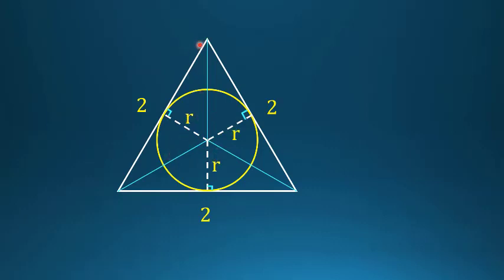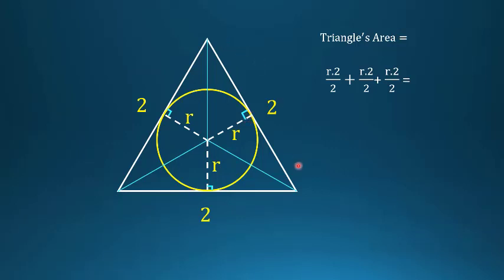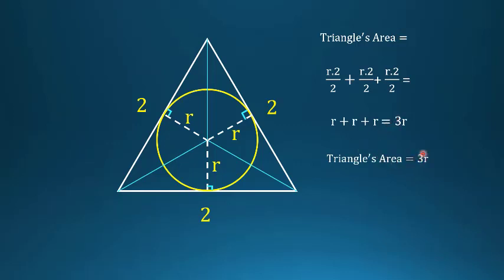We want to find the area of the equilateral triangle. The triangle is divided into three smaller triangles, each with height r and base 2. So the total area equals r×2/2 + r×2/2 + r×2/2, and after cancellation that gives r + r + r = 3r. So the triangle's area is 3r.